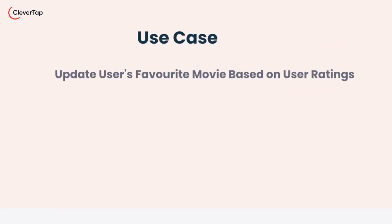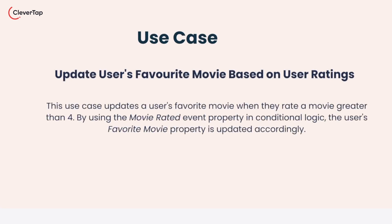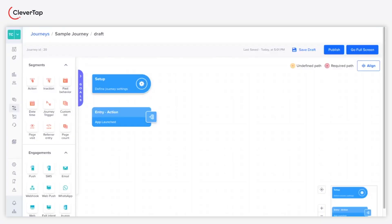Now, let's learn how to set up the User Profile Update node in a live journey. In this scenario, we update a user's favorite movie based on their ratings. If a user rates a movie higher than 4, that movie is updated to favorite. Let's take a live journey where the user launches the app.